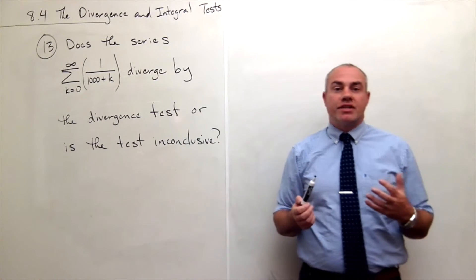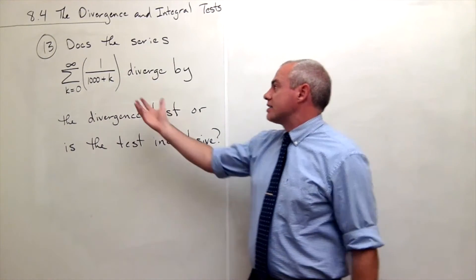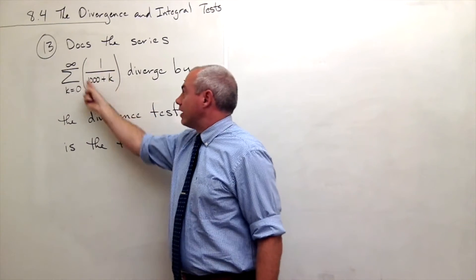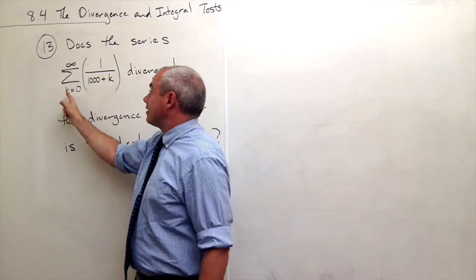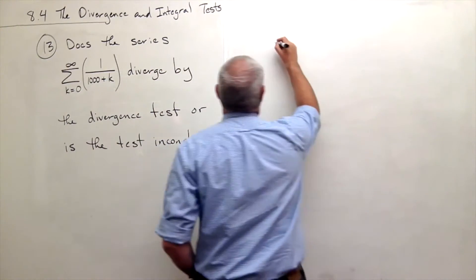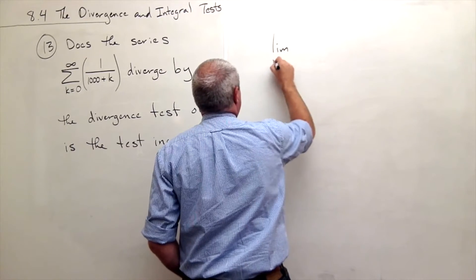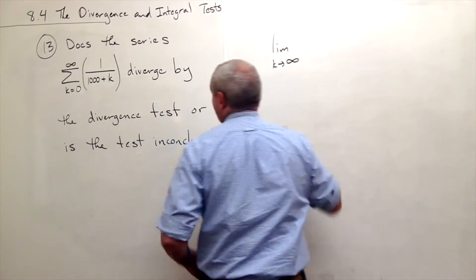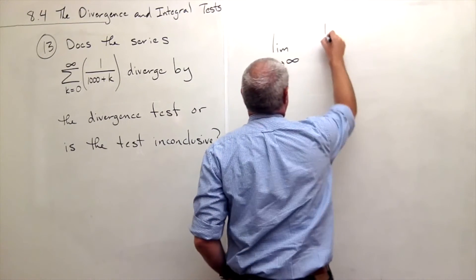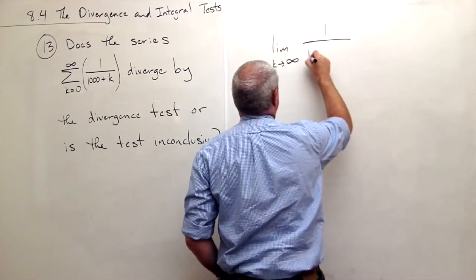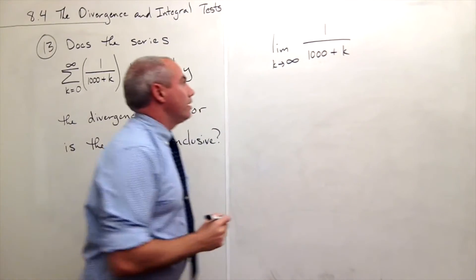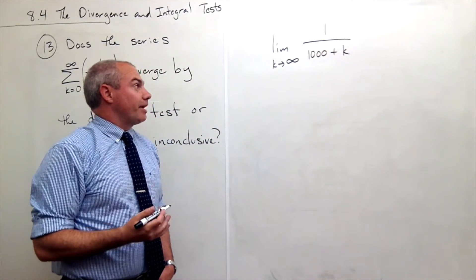So how I use the divergence test is I take the limit of the sequence that's sitting right here — not the series, but the sequence. So I'm going to take the limit as k goes to infinity of the sequence, in other words 1 over 1000 plus k, and see what we get out of this limit.